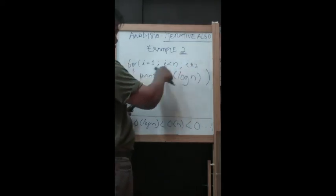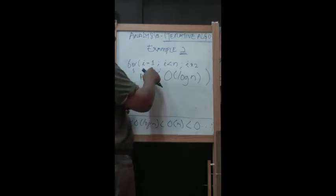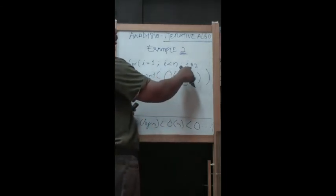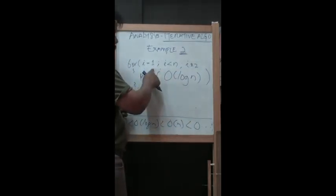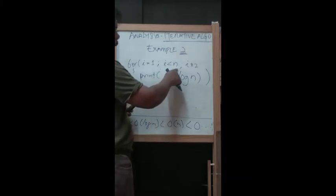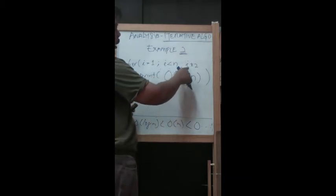Let's say if i equals one and this is true, i equals one times two, which is two. If i equals two and two is less than n, which is true, this i becomes two times two, which is four.